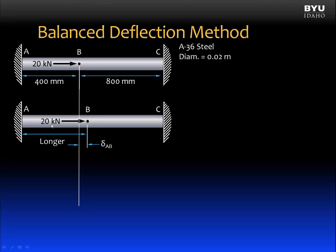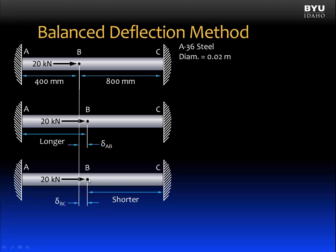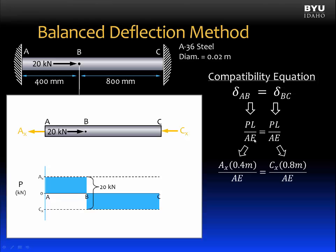When we put 20 kilonewton load at B, from A to B, that length will actually increase. It will get longer. And that change in length we'll call delta AB. And what's happening from B to C? When we apply that load, B to C must get shorter. And we can call that deflection delta BC. Now we can write a compatibility equation, which will be that this delta AB is equal to this delta BC. And now we expand those as follows.